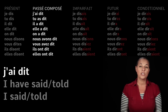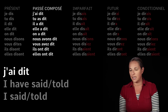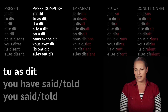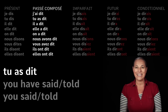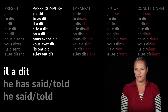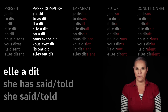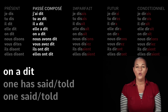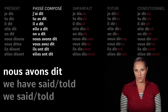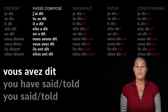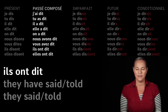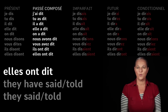So to conjugate this verb: j'ai dit — I have said, meaning 'I said' or 'I have said'. Tu as dit, il a dit, elle a dit, on a dit, nous avons dit, vous avez dit, ils ont dit, elles ont dit.